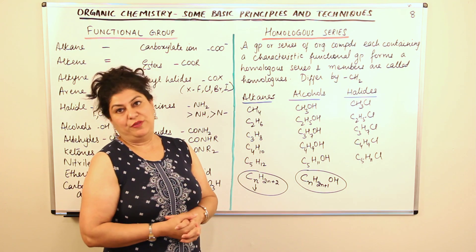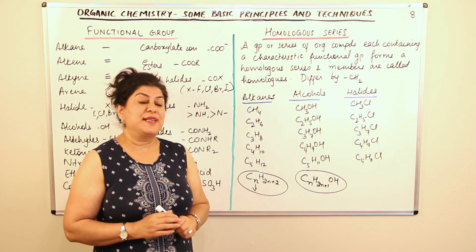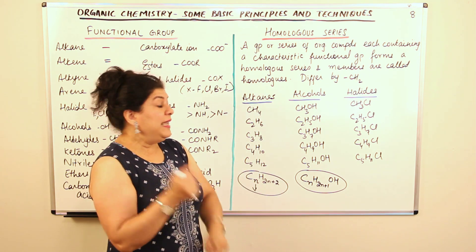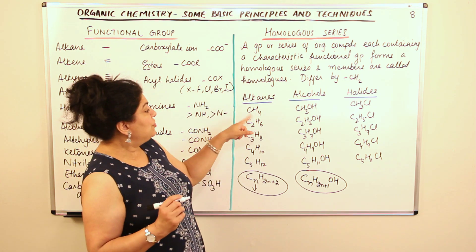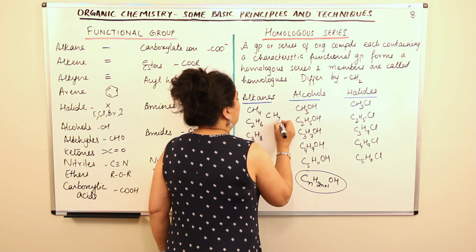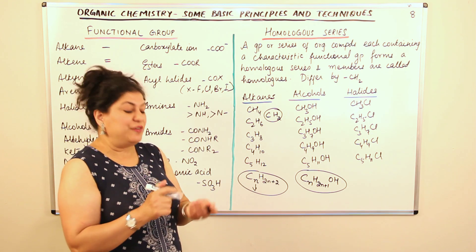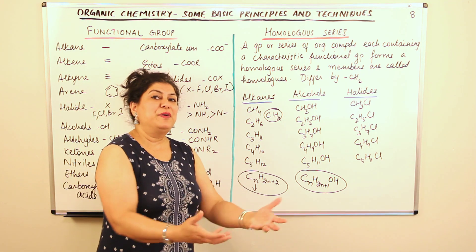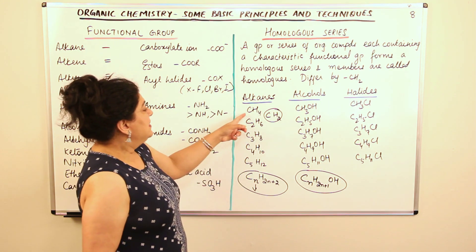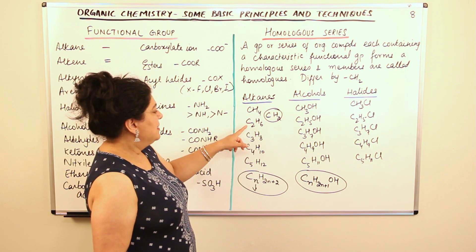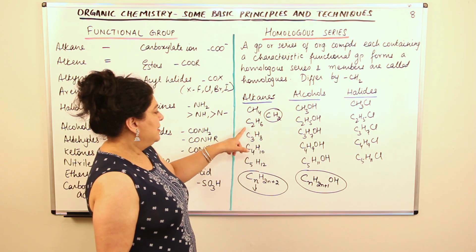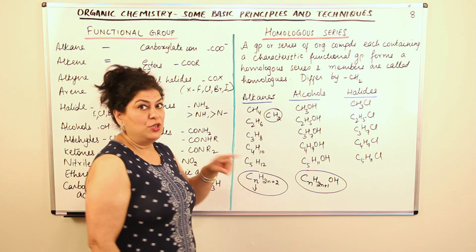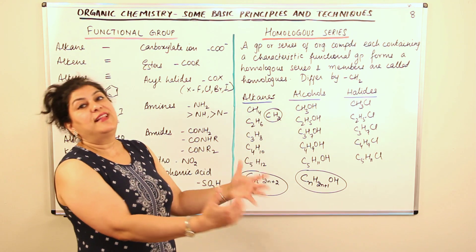What else do you observe in a homologous series? Not only can they be represented by the same general formula, but each consecutive member differs from its predecessor by a CH₂. You will observe that each new member differs from the previous member by just one carbon and two hydrogens. So the next member is only CH₂ greater than the previous one. You had CH₄, then C₂H₆ — one more C and two more hydrogens. From two to three carbons, you get one more carbon; the hydrogens go from 6 to 8 — two more. Every next member is CH₂ greater than the previous member.